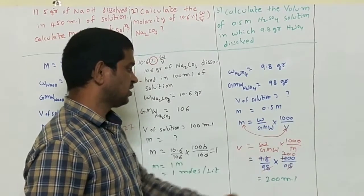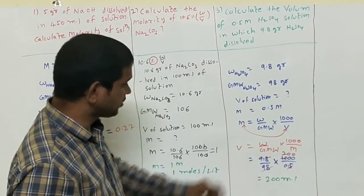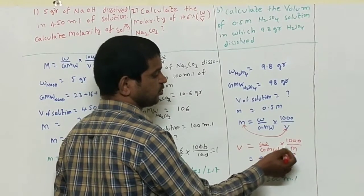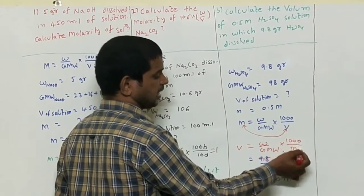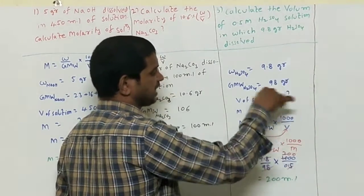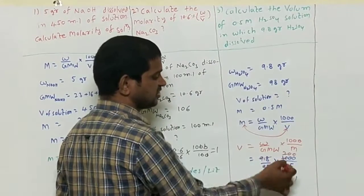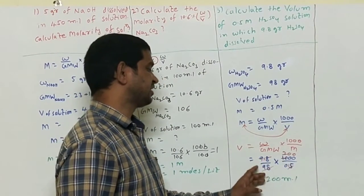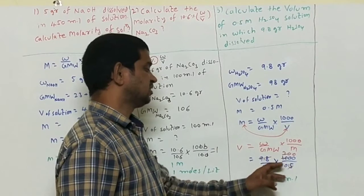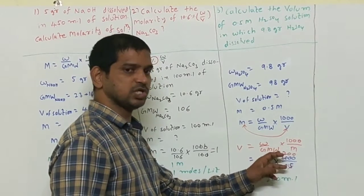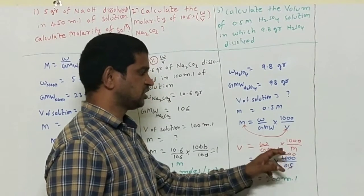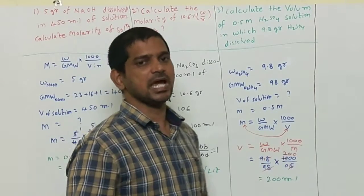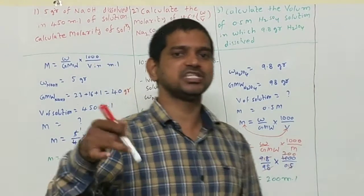After rearrangement we get V equals w divided by GMW, multiplied by 1000 divided by M. Substituting all the values: the decimal points cancel, 98 and 98 cancel, giving 200 ml as the answer. With this I am concluding this class.